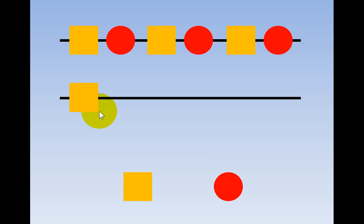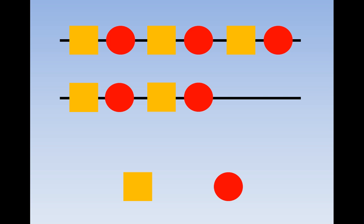Orange square — that's right. What comes next? Red circle — that's right. What comes next? Orange square — that's right. What comes next? Red circle — that's right. What comes next? Orange square — that's right. What comes next? Red circle — that's correct.